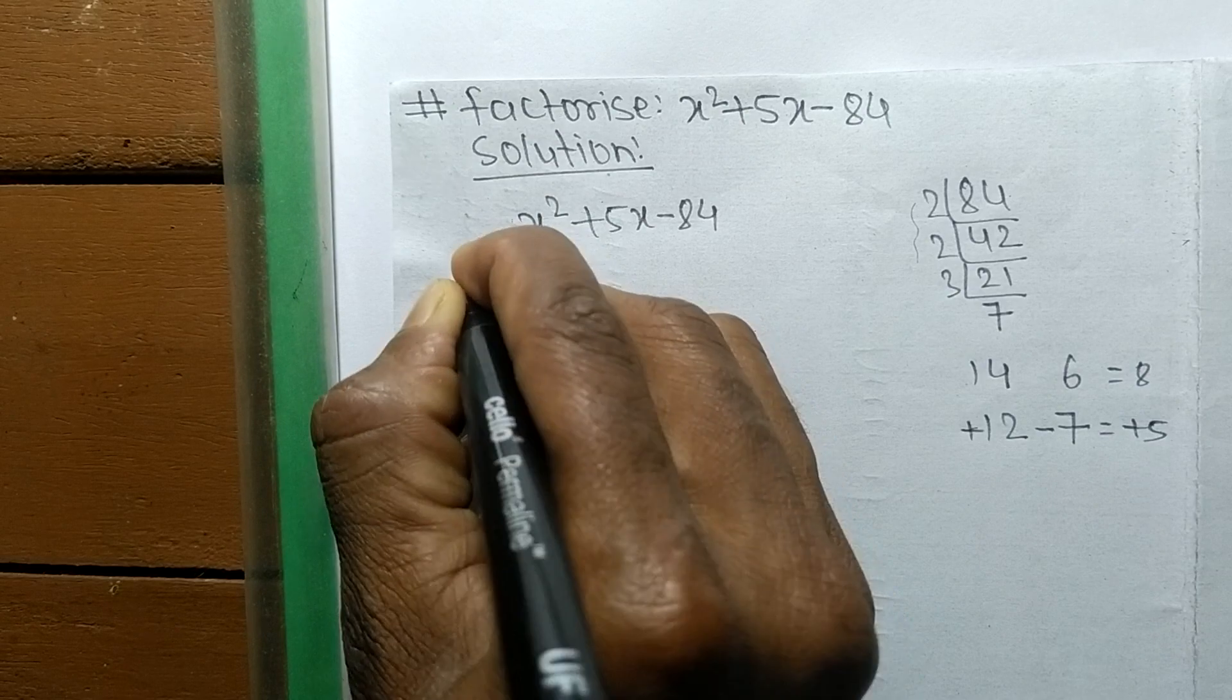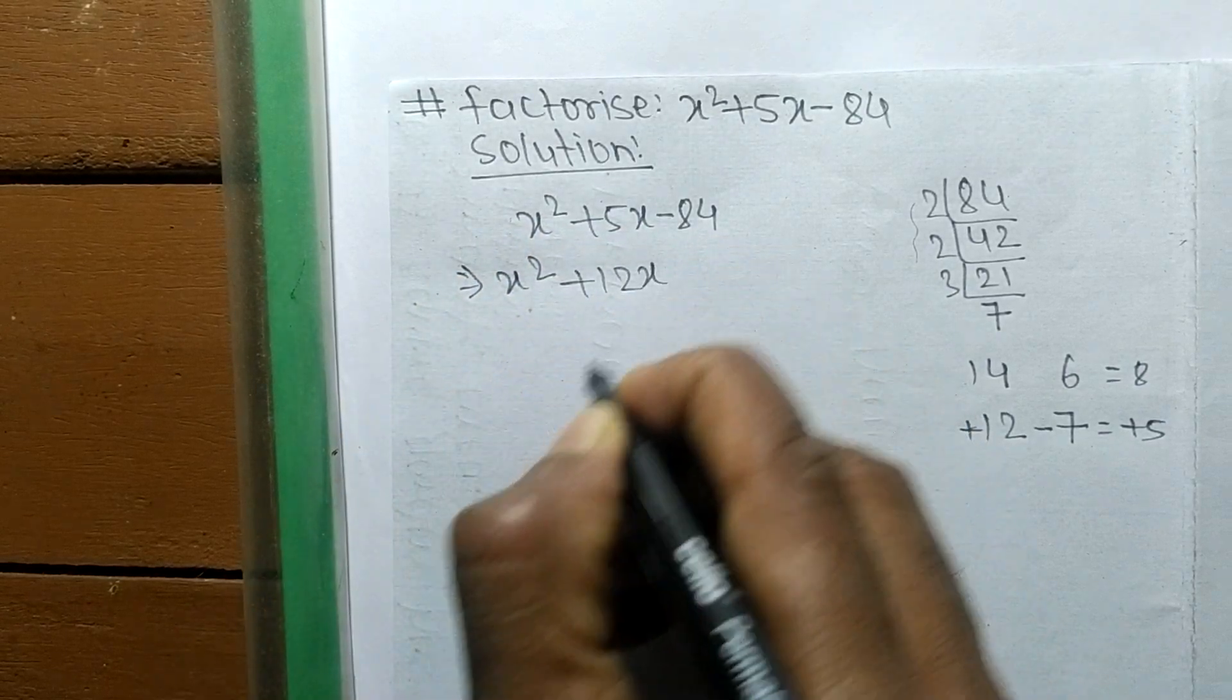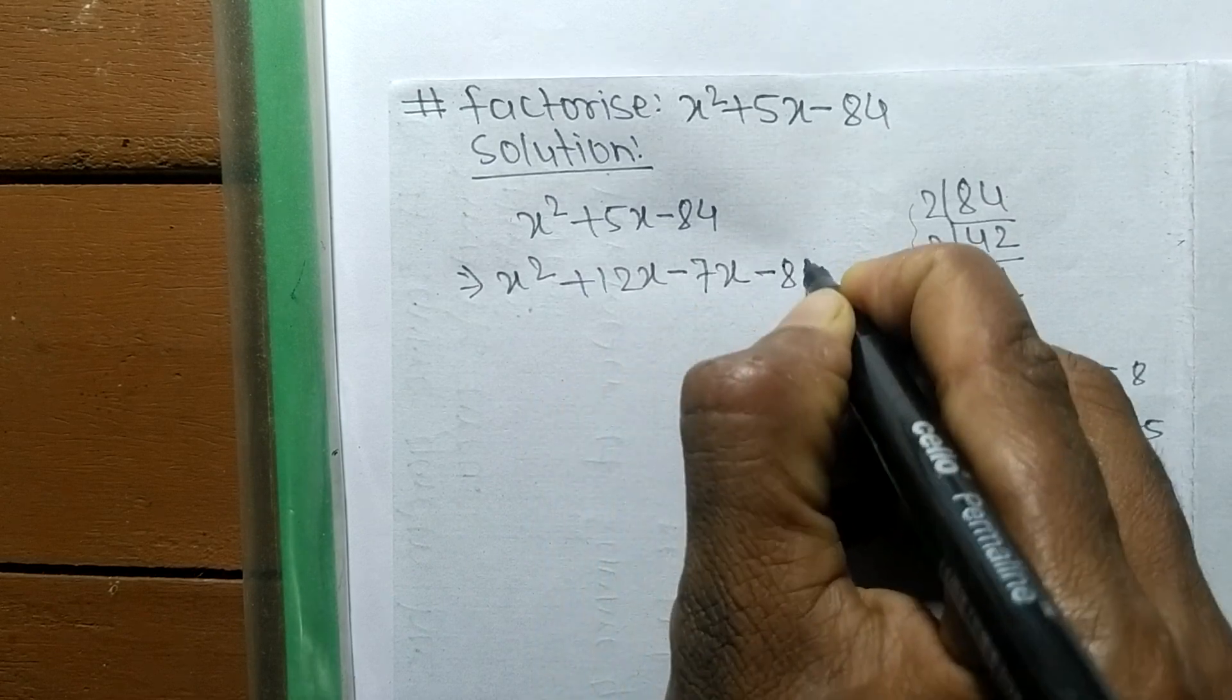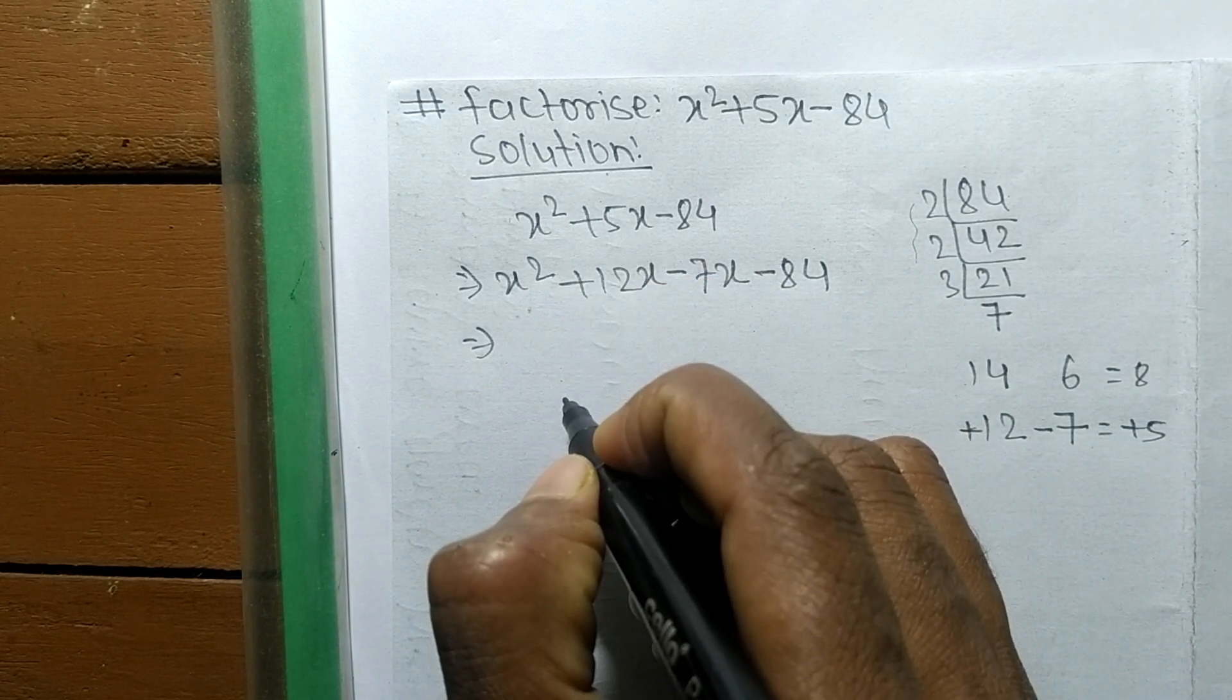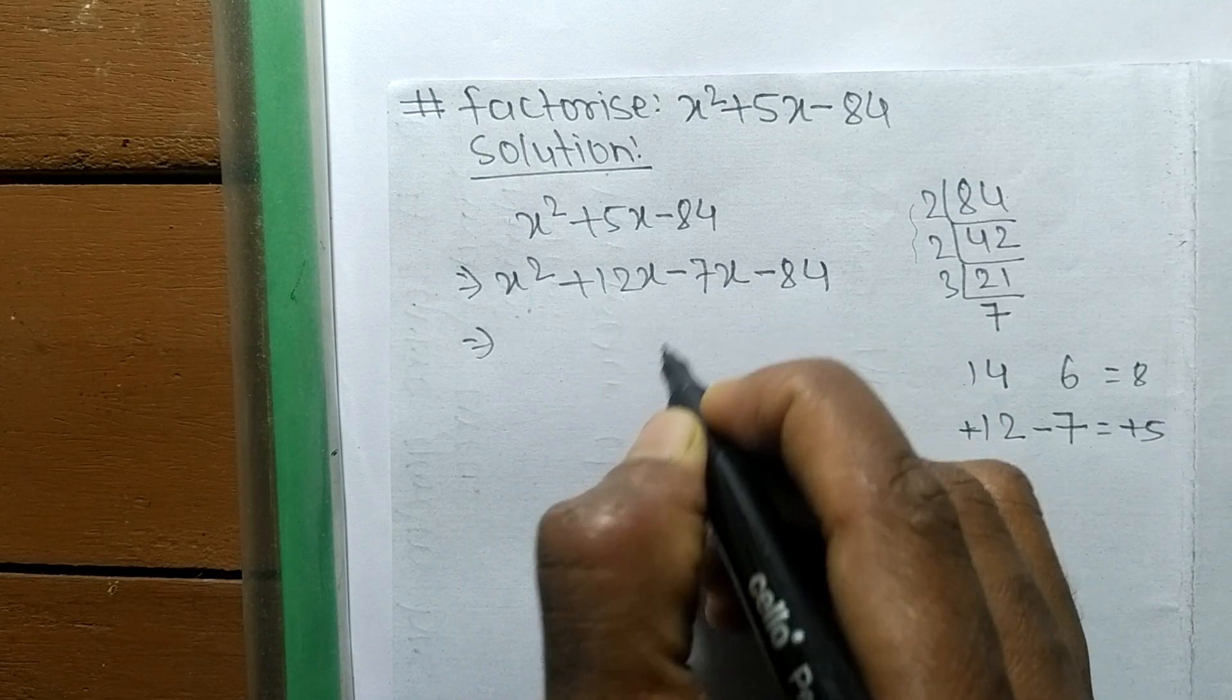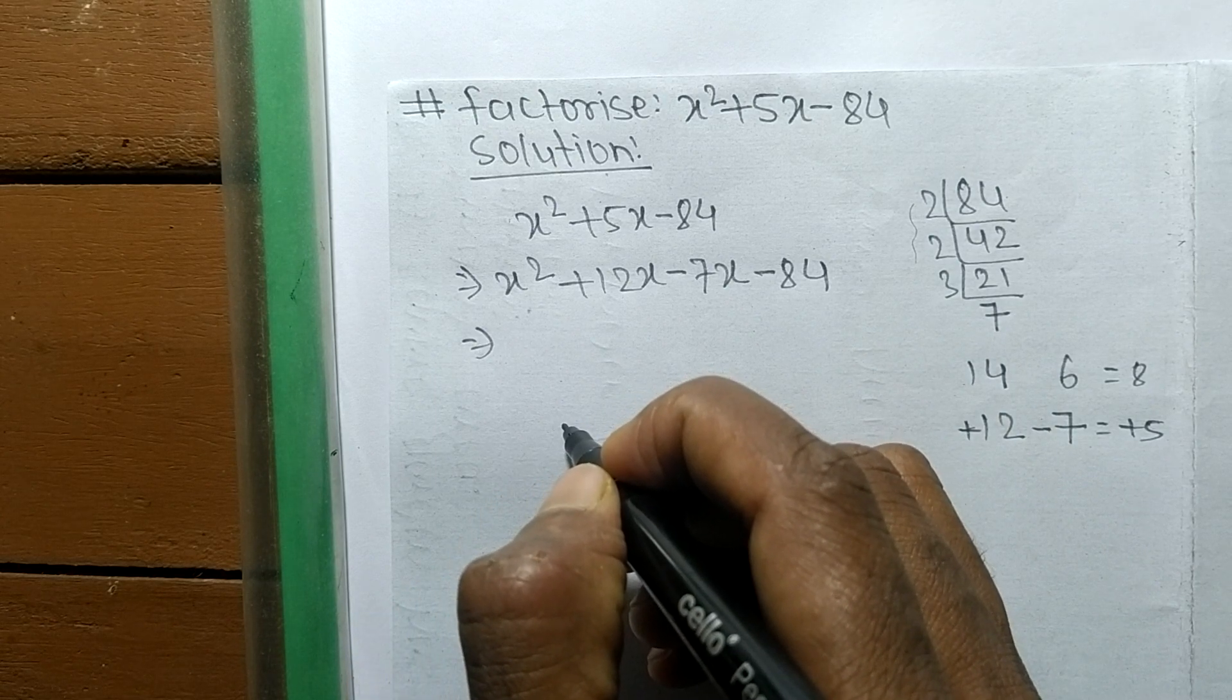We can write it as x² + 12x - 7x - 84. Plus 12x minus 7x equals +5x, and 12 times 7 equals 84. Now we have to divide this expression into two pairs.